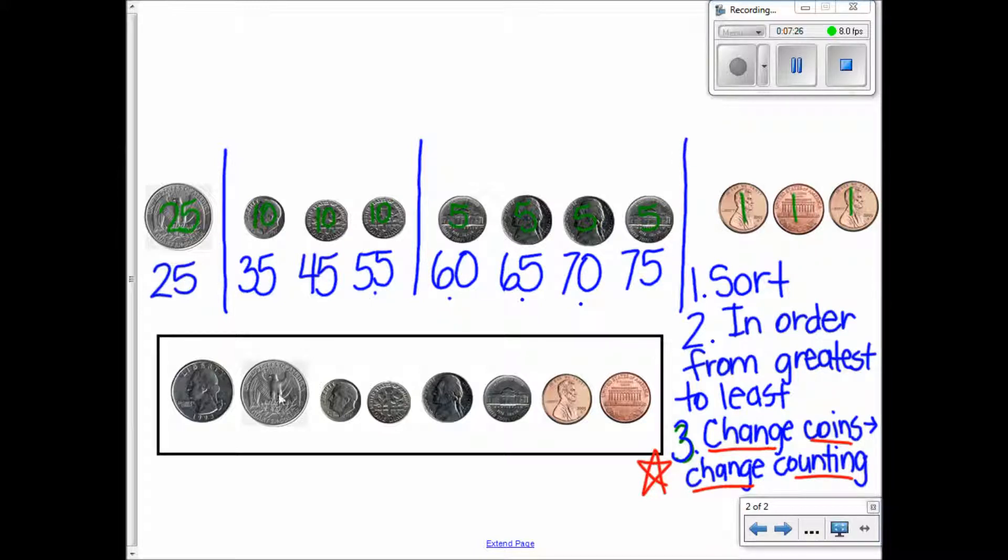Because I'm changing coins, I'm going to change counting. I am at 75. I'm going to begin to count by ones. 75, one more is 76, then 77, and 78. So the value of this collection of coins is how much? 78 cents. Yes, 78 cents.